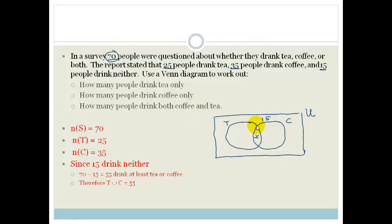So what do we know? We were told that the whole of this altogether added together has to be 55. But the number of people that drink tea are 25 and the number of people that drink coffee are 35.